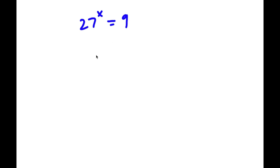Alright, so we have 27 to the power of x is equal to 9. What I'm first going to do is simplify 27 to the power of x a little.